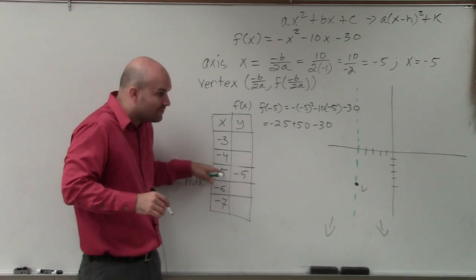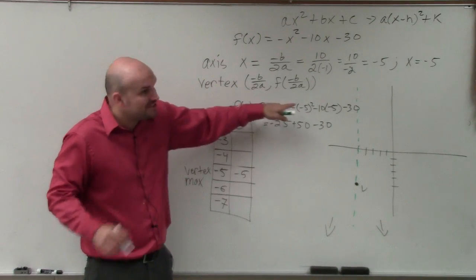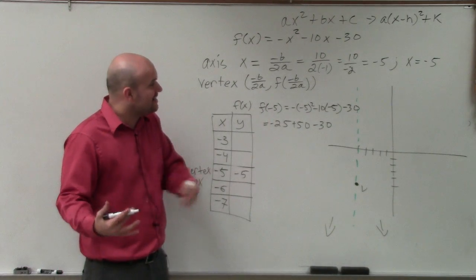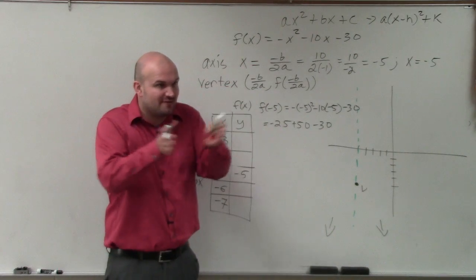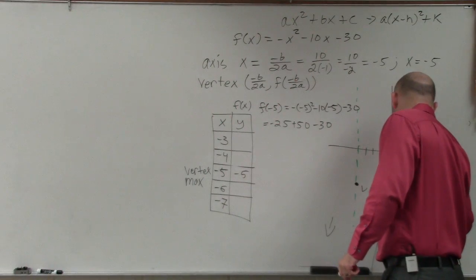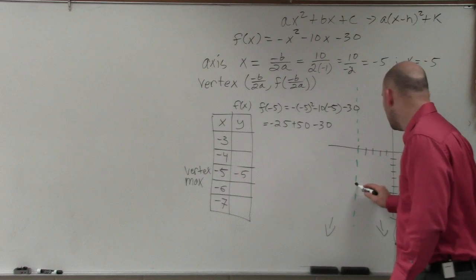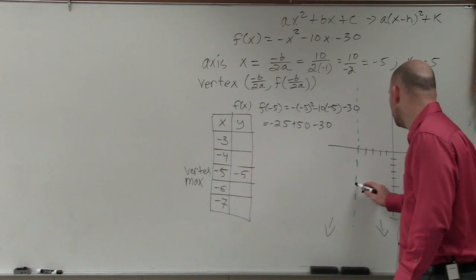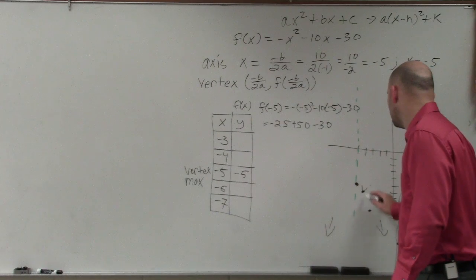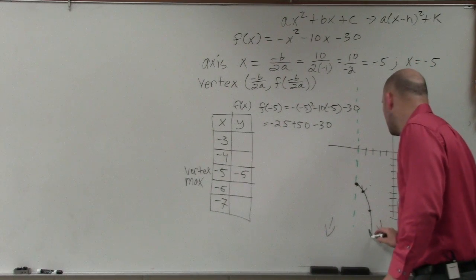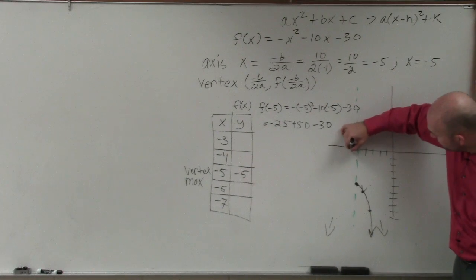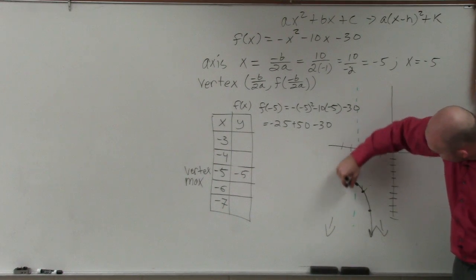You could plug in these two points, because they're right next to the axis of symmetry, plug them into your function, and figure out what the y-coordinates are. However, I can tell you that since there's no compression, it's just going to follow that pattern of over 1, down 1, over 1, down 2. I can go over 1, down 1, over 2, down 4. And that's what the graph looks on the right-hand side. I can now apply the axis of symmetry to reflect the points on the left-hand side.